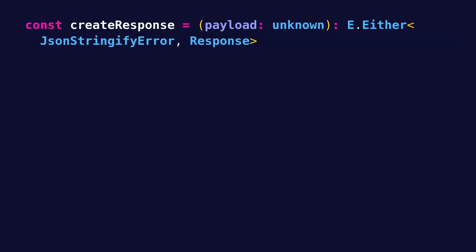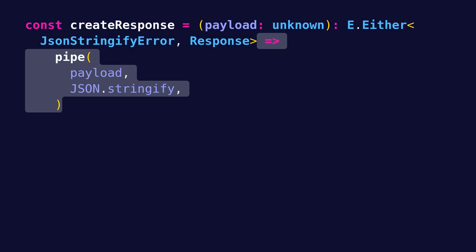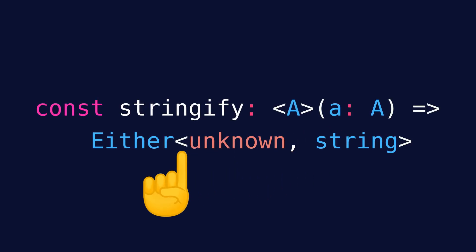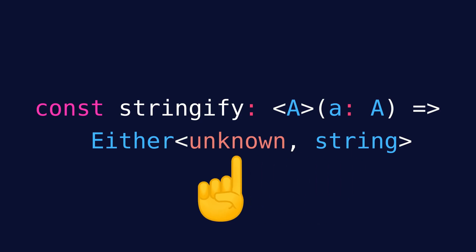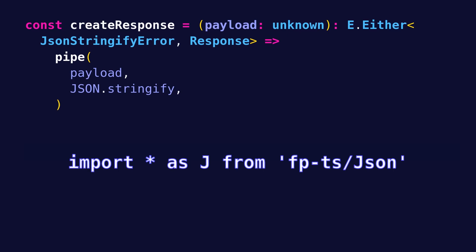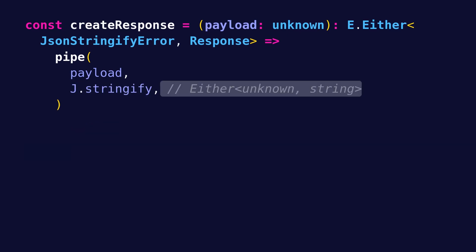Returning back to the createResponse function, the first thing we want to do is to JSON stringify the payload, so we could pipe the payload into JSON.stringify. However, that would not work because JSON.stringify would throw an error if it fails, but we want an Either. We could create our custom JSON stringify function using Either try-catch, like we did for JSON parse in another video, but this time let's actually use the JSON module that comes with fp-ts. It gives us the stringify util that takes some payload and returns Either unknown or string. Having unknown as the type of the error is not ideal, but we'll see how to transform it to a proper error later. Going back to createResponse, we can import the entire fp-ts JSON module as a namespace J, and pipe the payload into this new JSON stringify. So the result we get back is an Either unknown or string.